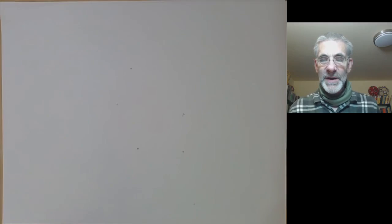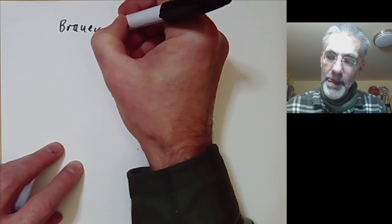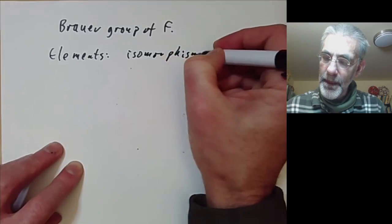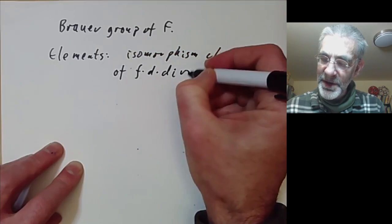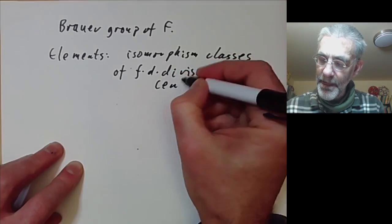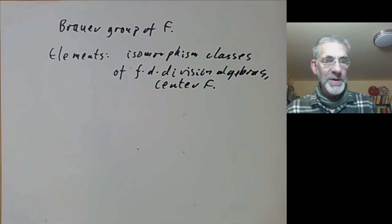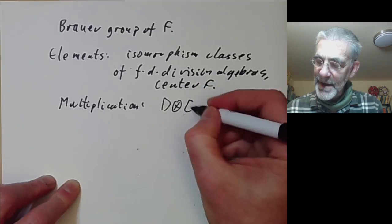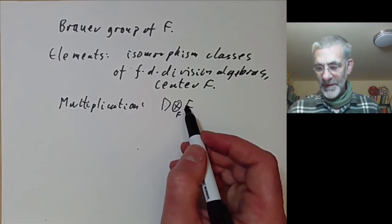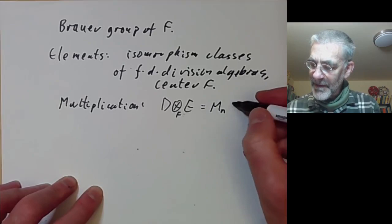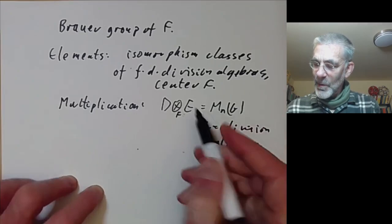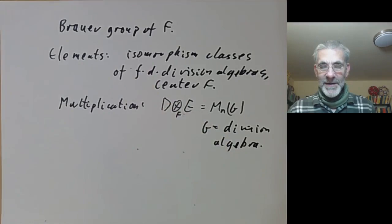So I'll just finish by making a few background comments about division algebras. There's actually a group called the Brouwer group of field F. The elements are isomorphism classes of finite dimensional division algebras with center equal to F. And it's not at all obvious that these form a group. I mean, what on earth is the group multiplication? Well, the multiplication, if you've got two division algebras D and E, you take their tensor products over the field F. And this is, in general, not a division algebra. However, it turns out to be a matrix algebra over some division algebra.